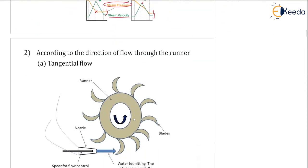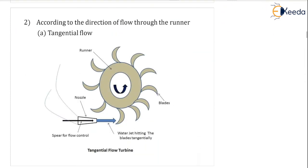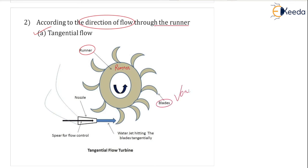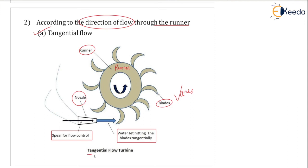The second classification of turbines is according to the direction of flow through the runner. The first type is tangential flow, where you can see the runner and blades also known as vanes, along with nozzles. The direction of water is tangential to the runner — the water jet hits the blades tangentially — and a spear is used for flow control. The direction of rotation is anticlockwise.